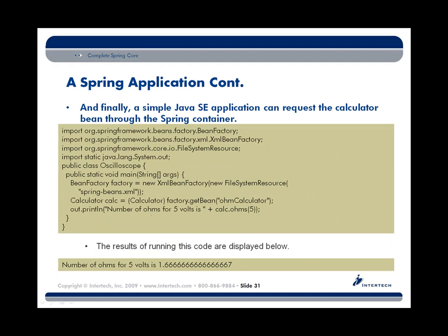Now, how do we use our Spring bean in a Java SE application? I've set up a little Java SE application with a simple main method in a class called Oscilloscope. Inside the main method, the very first thing I do is ask for something called the XMLBeanFactory. This is our Spring container — the apparatus that will actually run our Spring beans, in this case our CalculatorImpl. When we build our XMLBeanFactory, we provide the name of our Spring bean configuration file, essentially saying: container, when you come up, go read spring-beans.xml to understand how our beans are to be configured, so that when we ask for one, we'll get exactly the type of bean we want.